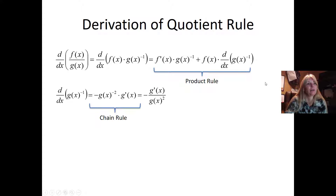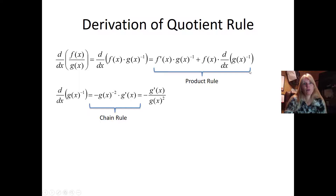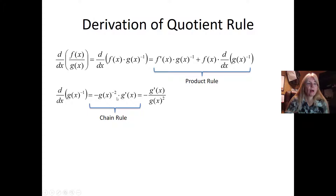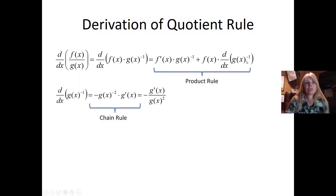How do we take the derivative of this? If you really understood the chain rule, you're going: aha, chain rule. I'm going to do it the shortcut way — though you could use substitution. I'm doing it by bringing the power down. So negative one comes down front, I subtract one so that becomes negative two, and then times the derivative. That's the derivative of the outside times the derivative of the inside, which is just g prime of x.